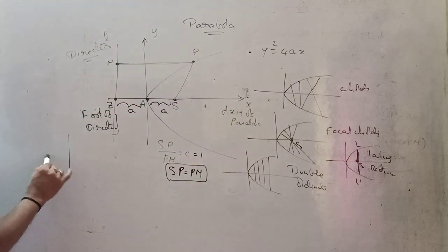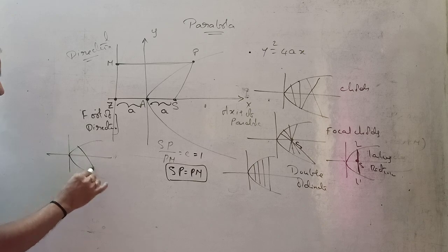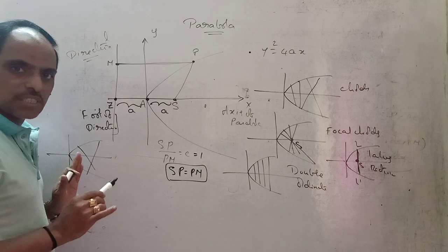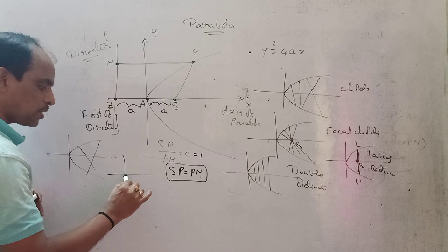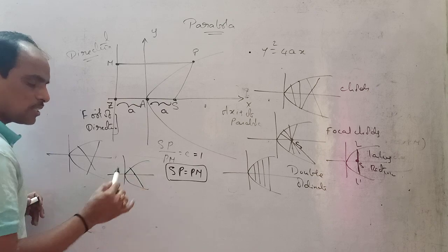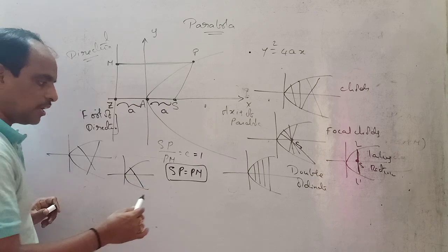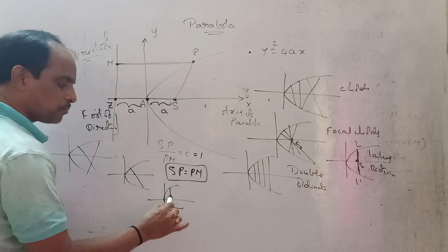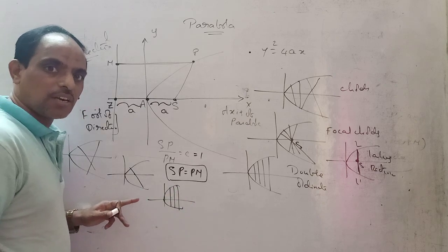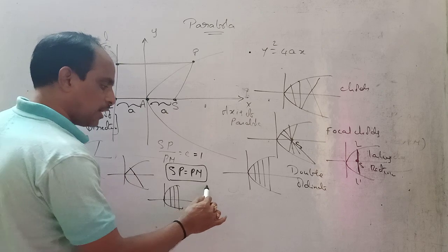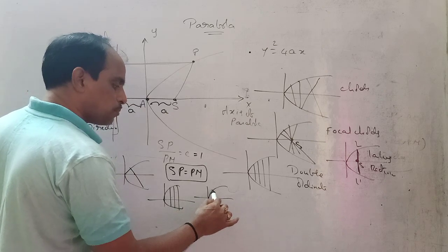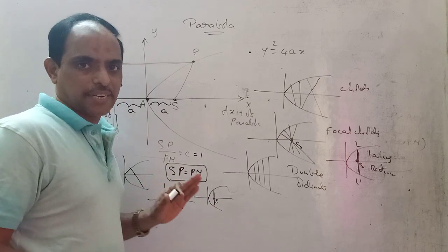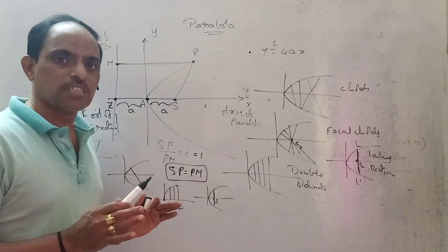So these are the four important definitions. First, a chord — joining two points on the parabola, that is just a chord. If a chord passes through the focus, it is called a focal chord. When a chord is perpendicular to the axis of the parabola, it is called a double ordinate. A double ordinate passing through the focus is called the latus rectum.